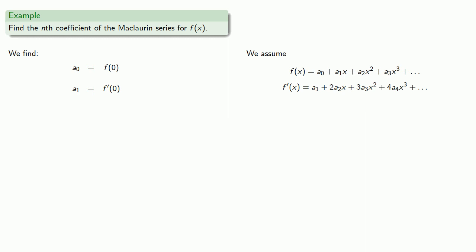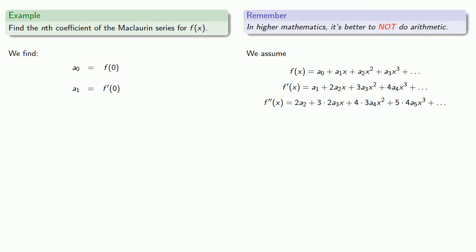If we differentiate again, we find, again because it's an infinite series, we get some additional terms that we didn't initially write down. Here we'll leave our coefficients in factored form because it's useful in higher mathematics not to do arithmetic. We find our second derivative at zero, and so our a2 coefficient must be f''(0) divided by 2.